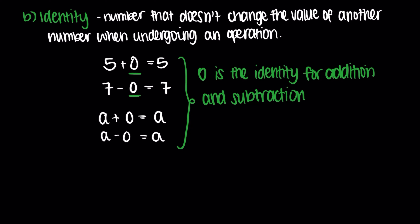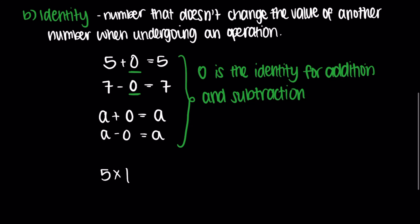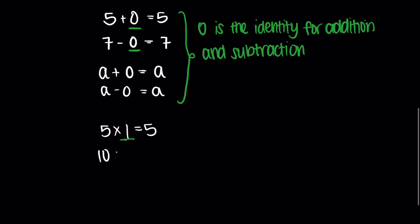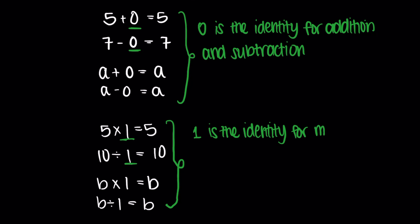Likewise, for multiplication and division, if we have the number 5, we need a number that when multiplied by 5 doesn't change its value, so we'd receive 5 in the end. We know that 5 multiplied by 1 is equal to 5, which means that 1 is the identity for multiplication. Similarly, 10 divided by 1 is equal to 10, so 1 is the identifying number for division. So if we have any number B, then B multiplied by 1 is equal to B always, and B divided by 1 is equal to B. This means that 1 is the multiplicative identity.